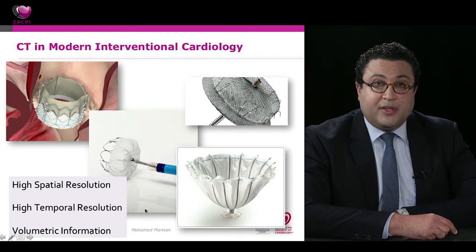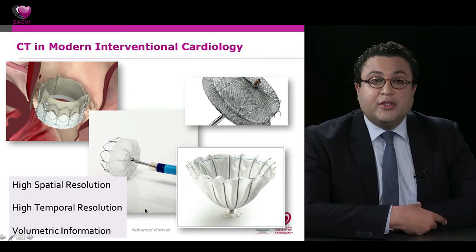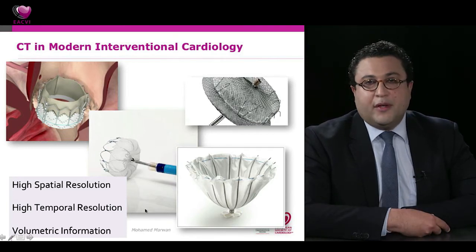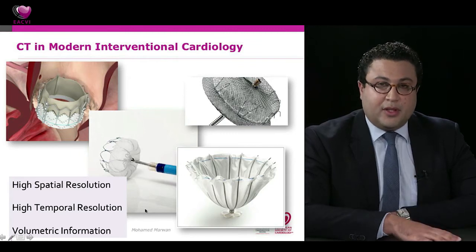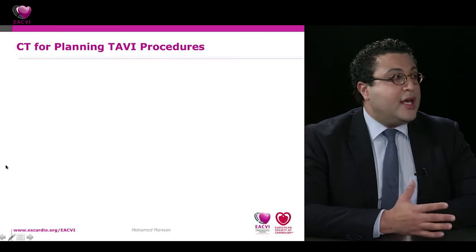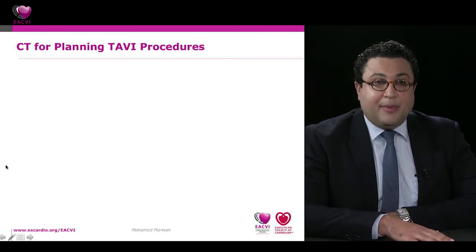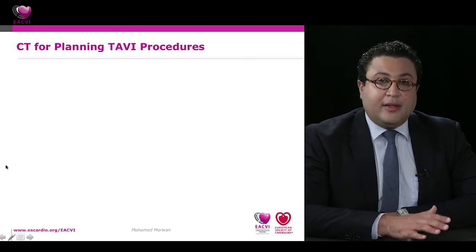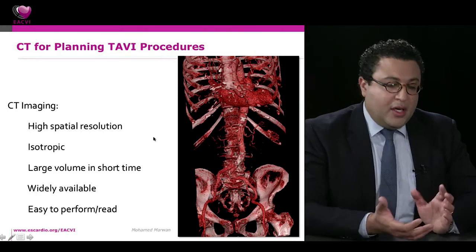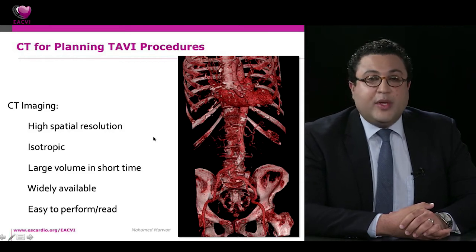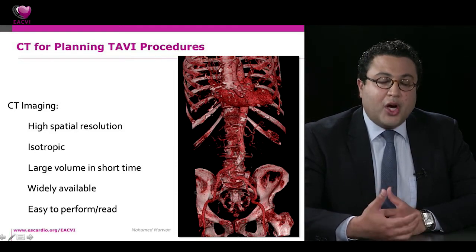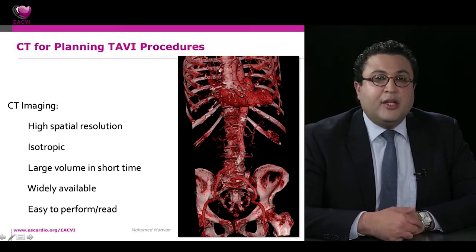CT delivers true volumetric information, which is very helpful in this context. For TAVI planning in 2017, CT is an established imaging modality for looking at anatomy before the procedure. CT needs to cover the aortic root to decide if TAVI is feasible, and beyond that, the iliofemoral axis to decide between transfemoral versus non-transfemoral approaches. Key CT advantages include high spatial resolution, isotropic resolution, large volume acquisition in short time — relevant for elderly patients who cannot hold their breath long — and wide availability.